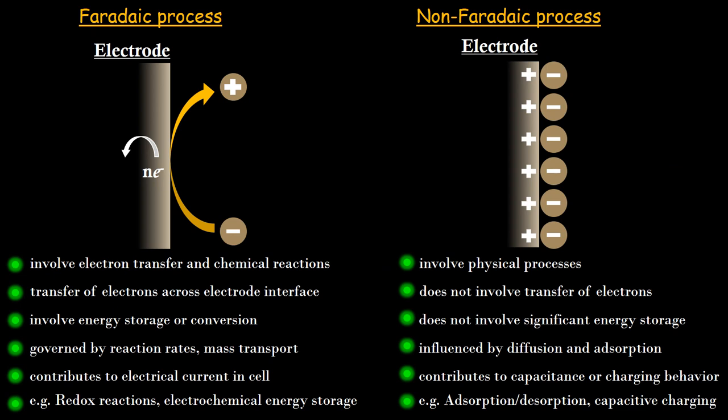The second point is the transfer of electrons across the electrode interface. As the reaction progresses, the electron is getting transferred across the electrode interface — that means the electrode and electrolyte junction. The third point is that it involves energy storage or conversion. The fourth point is that it is governed by reaction rates and mass transport. We will talk about this in more detail in upcoming videos.